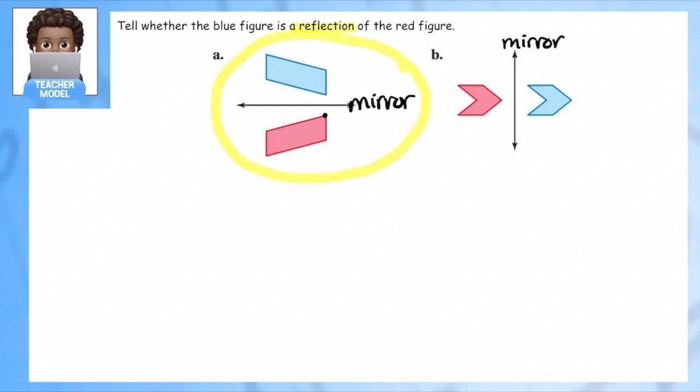The other thing I want you to notice is the distance between the points on the mirror. And noticing that these distances will be the same for all the points in the figures. Here you can see it's not true where this point is very short to the mirror. This one is far away. So that's why this is not a reflection.